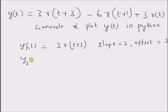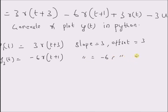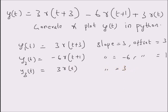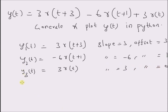Next, y2(t) is equal to minus six times r(t + 1). That means the slope is equal to minus six and the offset is equal to one — that is, the signal starts at minus one. The last ramp signal is y3(t) equal to three times r(t), that is, slope equal to three and offset equal to zero.